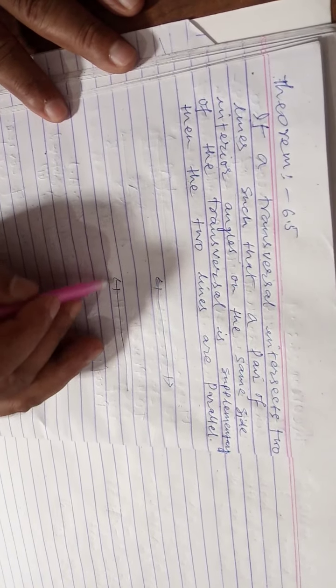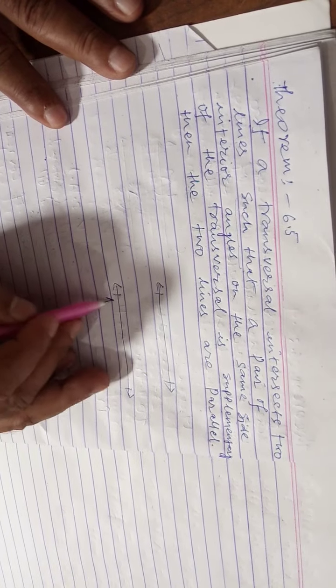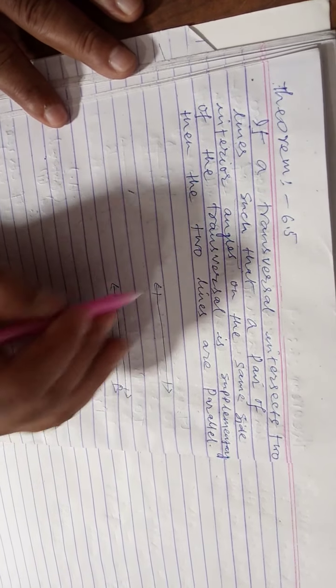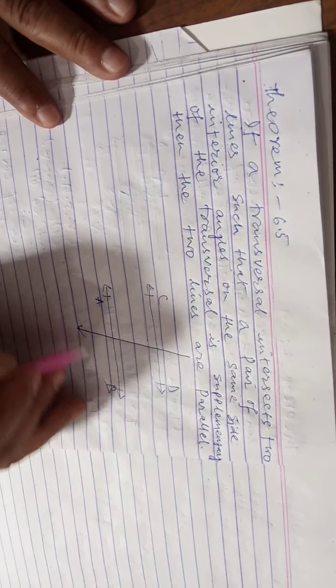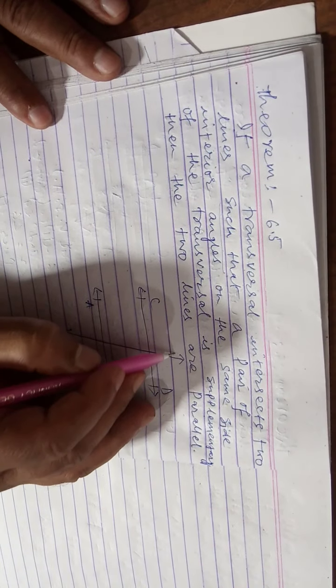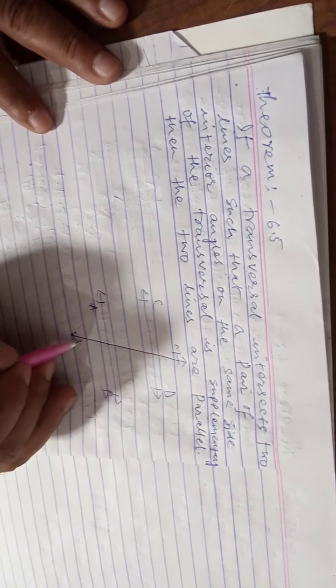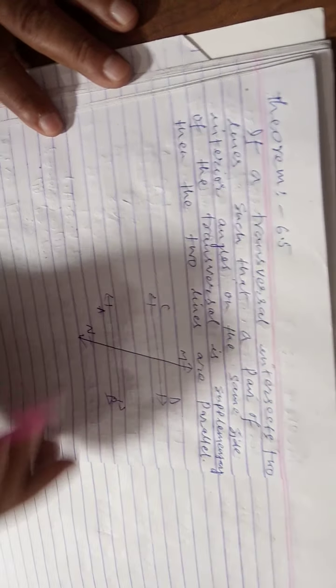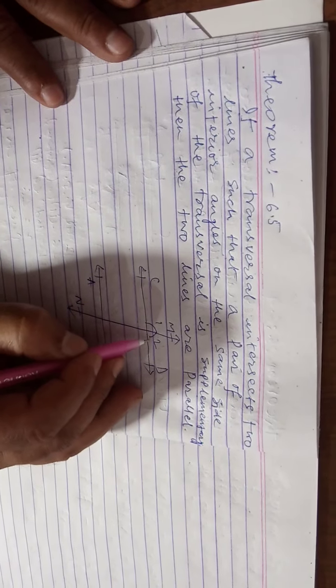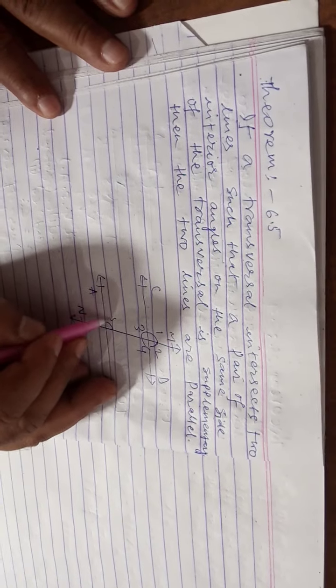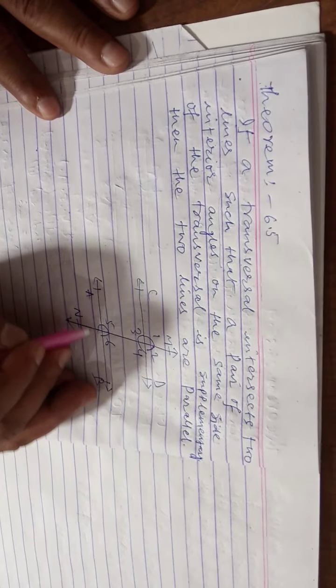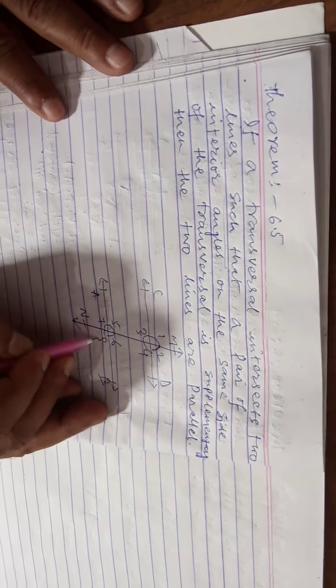Two lines, line AB and line CD. Two lines. Angles 1, 2, 3, 4, 5, 6, 7, 8 denote.